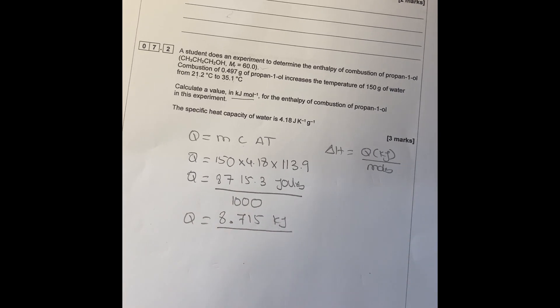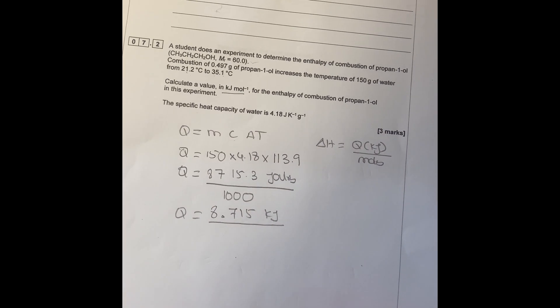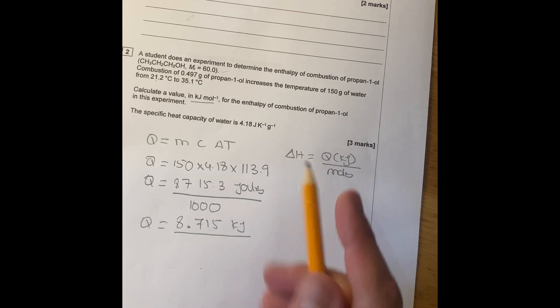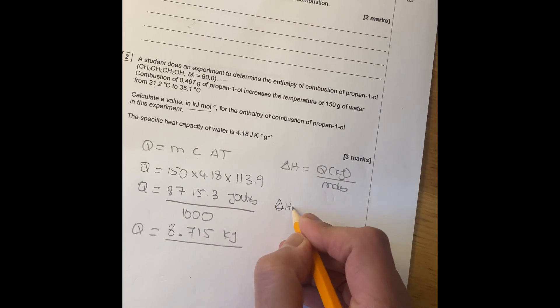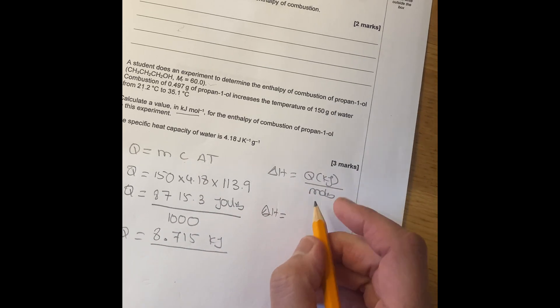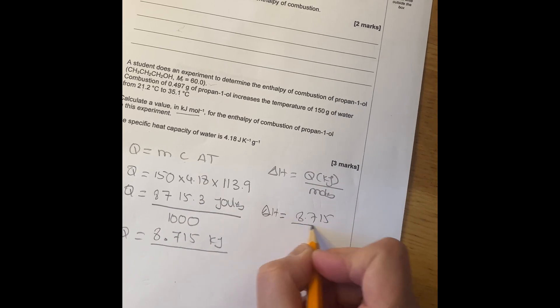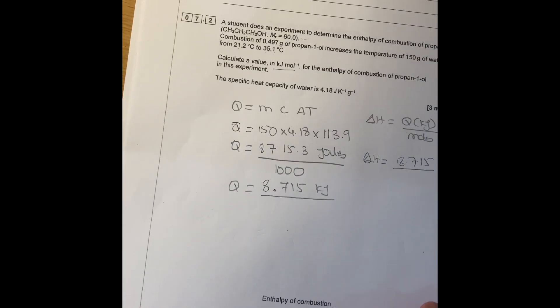You can put a negative value there if you want to, but you don't need to at the moment. Then you have delta H equals to the kilojoules, which is 8.715 divided by moles. So we need to calculate moles now.